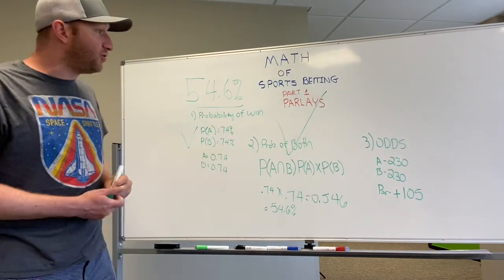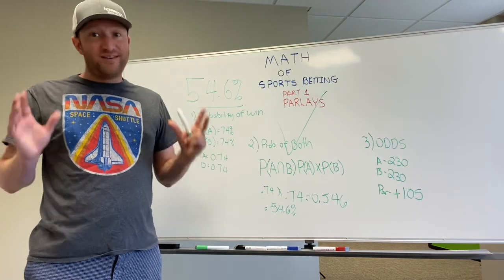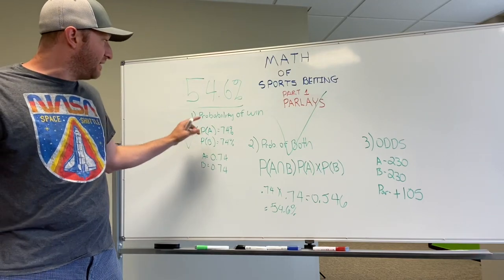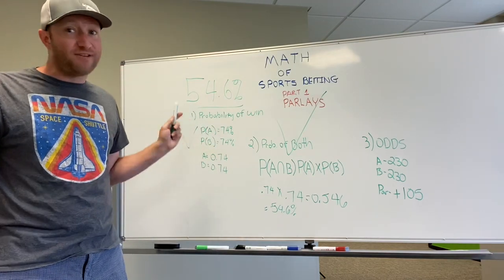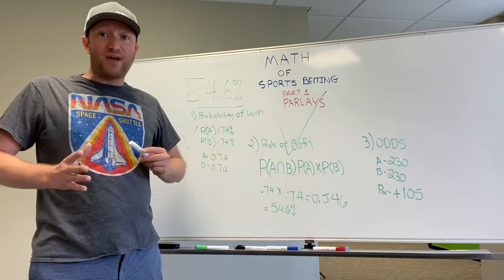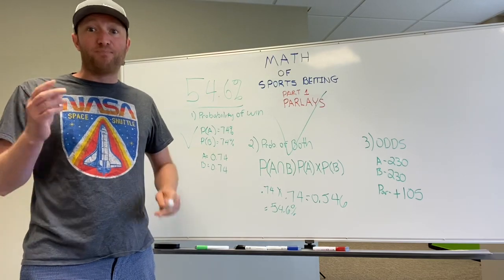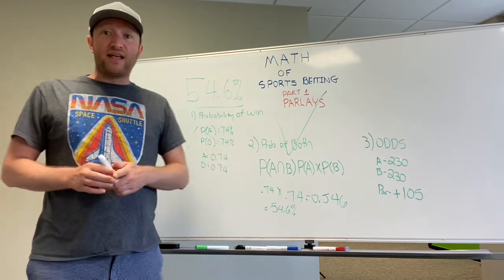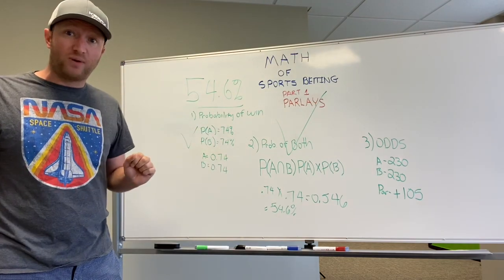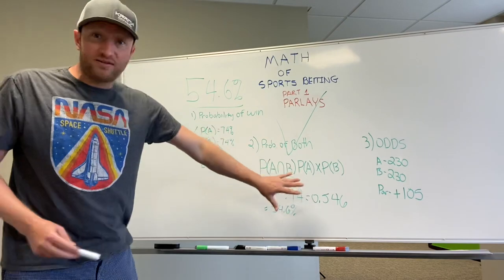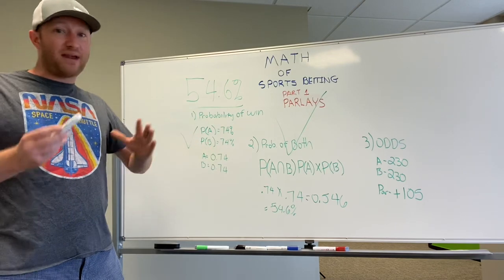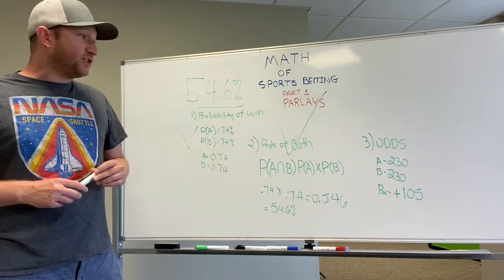We're going to take this number, the 0.546, and we're just going to convert that over into percentage by moving the decimal point, which gives us 54.6%. So now what this is telling us is if our numbers are correct and we're going to hit 74% in both of these games, then we would expect that the chances of both of these games winning will occur 54.6% of the time.